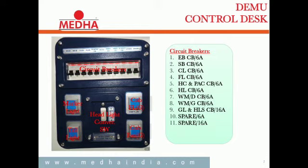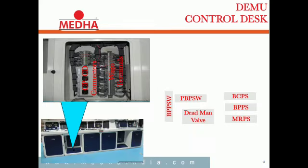HCL and PAC CB Bar 6 Amps, HLCB Bar 6 Amps, WM Bar D CB Bar 6 Amps. G CB Bar 6 Amps, GL and HLS CB Bar 16 Amps, Spare 16 Amps, Spare 16 Amps, Spare 6 Amps, Spare 16 Amps. CPCD Conductor WAGO Terminals.